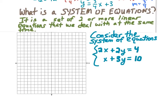Now let's talk about what a system of equations is. Because we're working with linear equations, it's really a system of linear equations — a set of two or more linear equations that we deal with at the same time. We're not looking at the equations separately; we're trying to determine something by considering them together. I'm going to graph them separately and then make a determination from that.